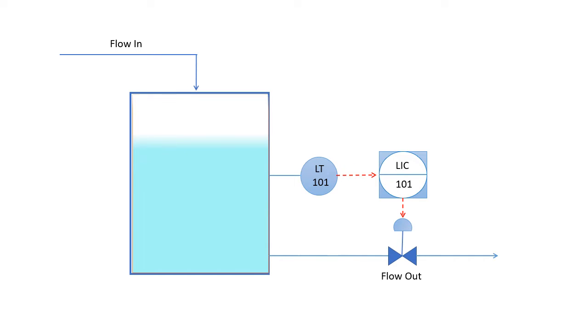Now when the flow in is not equal to flow out, there will be either an increase in level or decrease in level. Our aim is to keep the level at a constant level.